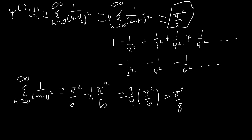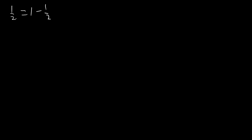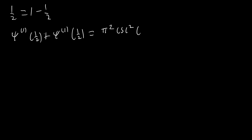Another way to evaluate trigamma(1/2) is more interesting: instead of using the direct definition, we use our reflection formula. Since 1/2 equals 1 minus 1/2, this works out nicely and we get trigamma(1/2) + trigamma(1/2) equals π²·csc²(π/2). Since csc(π/2) = 1, this is just π². So 2·trigamma(1/2) = π², meaning trigamma(1/2) = π²/2, which was a much easier method.